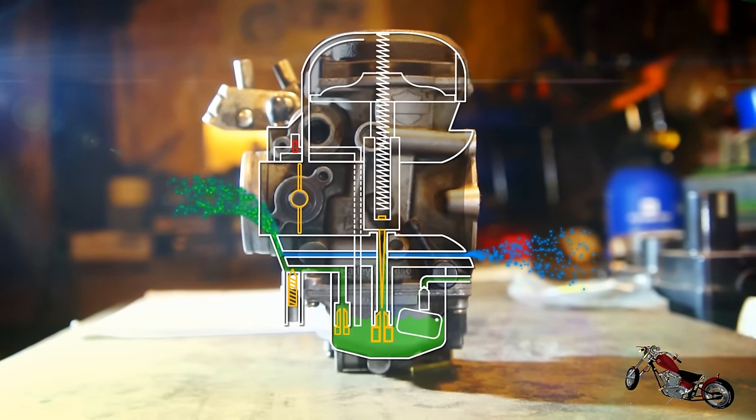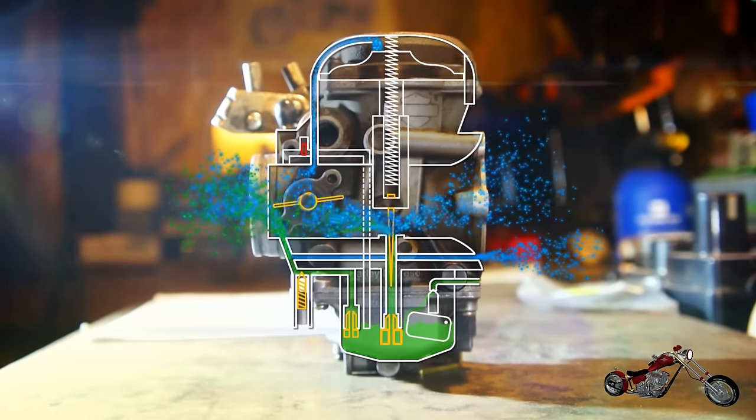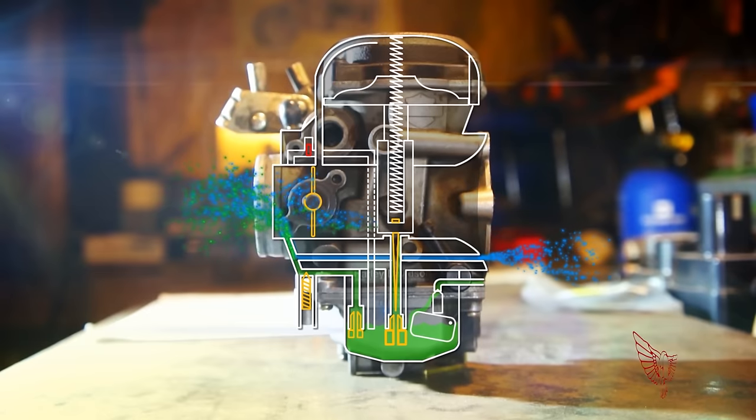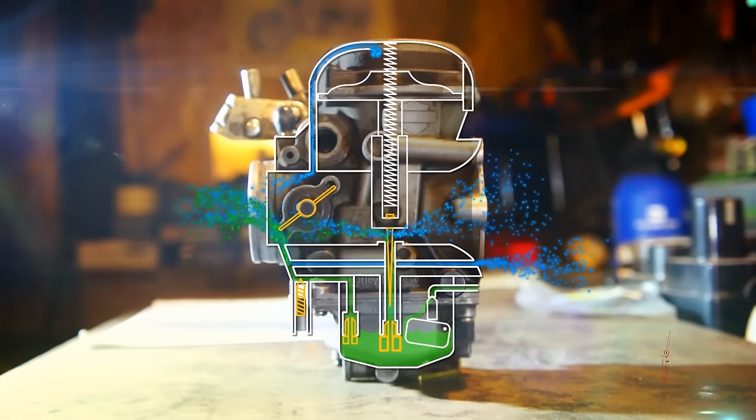When we twist the throttle, the main jet doesn't start to deliver fuel right away. For a small amount of time, the idle jet is still the only source of fuel to the engine, which is why setting the mixture too lean or too rich will directly affect the responsiveness of the engine.